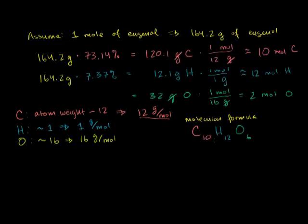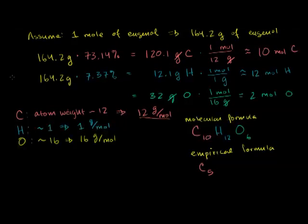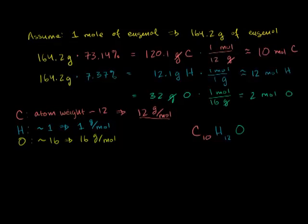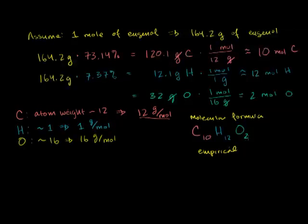The empirical formula is found by reducing this ratio to the simplest terms. Since 10, 12, and 2 all share a common factor of 2, we divide each by 2. This gives us 5 carbons, 6 hydrogens, and 1 oxygen. So the empirical formula is C₅H₆O.